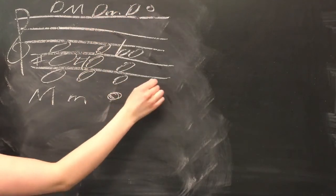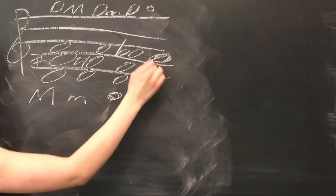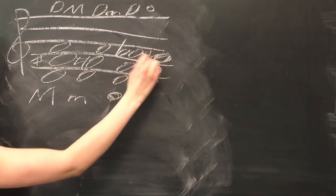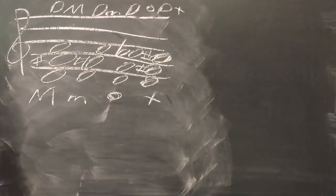To make it diminished, we lower the fifth, the A, by one half-step to an Ab. To make an augmented chord, we start with a major chord and raise the fifth, the A, by one half-step to an A sharp.